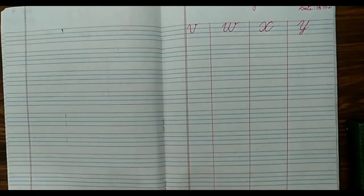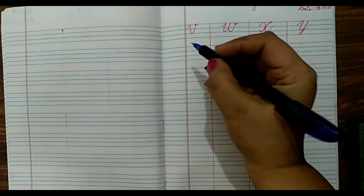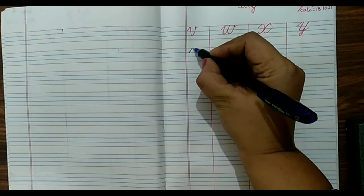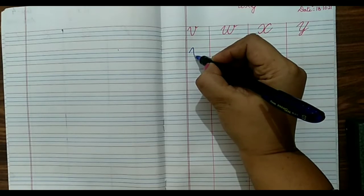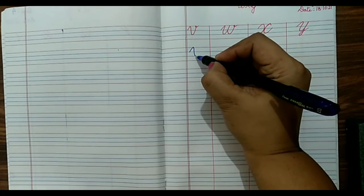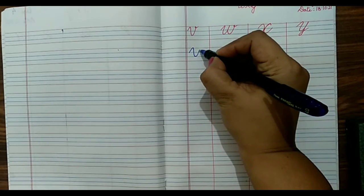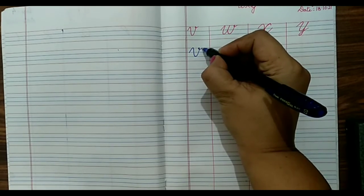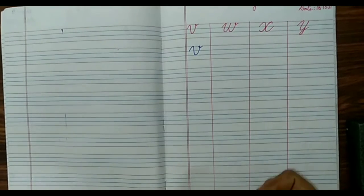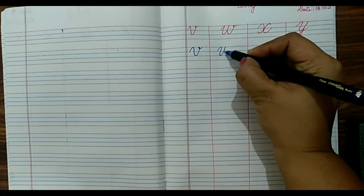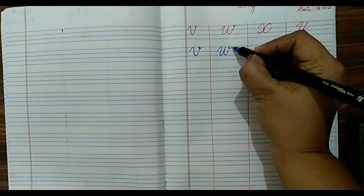For capital cursive V, we will start from the first blue line, go up slanting but make a curve, come down, touch the bottom blue line, make another curve and a tail like this. Same with capital W. It should be curved and a tail.